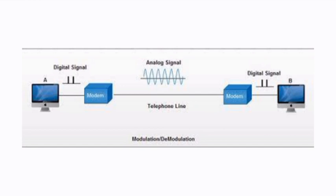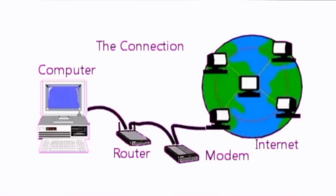Signals going from your computer to broadband — in short, the reverse process of modulation — is called demodulation. ADSL support is required in a router to act as a modem, and DSL for direct broadband.